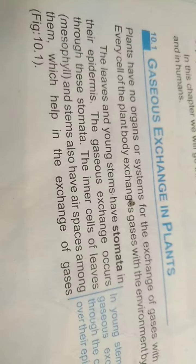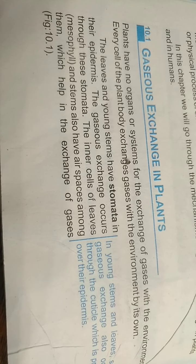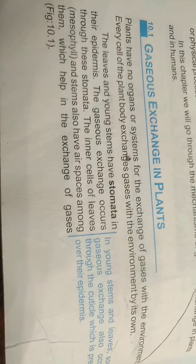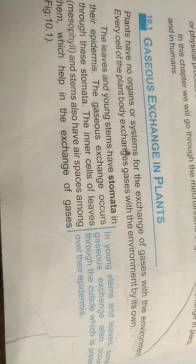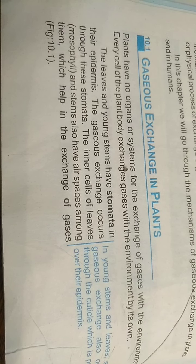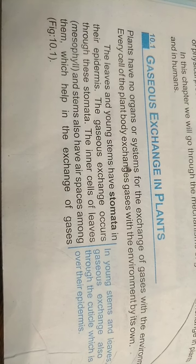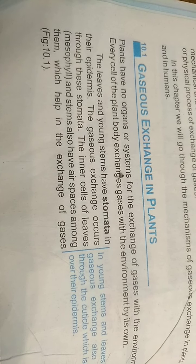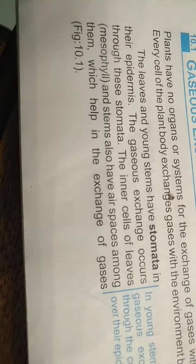In this chapter we will go through the mechanism of gaseous exchange in plants and humans. Gaseous exchange in plants: plants have no organs or systems for the exchange of gases with the environment. Every cell of the plant body exchanges gases with the environment on its own. Unlike humans with lungs or aquatic animals with gills, plants have no specialized organs for gas exchange. Each body part — leaves, stems, roots — has specialized structures responsible for gas exchange.